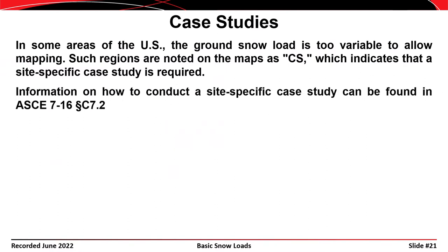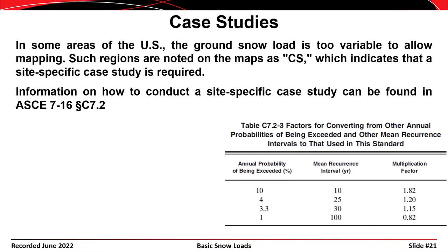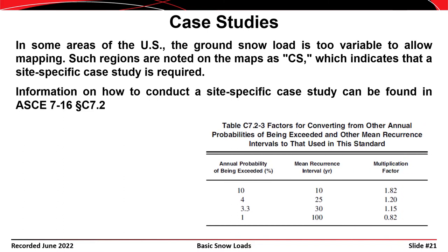Information on how to conduct a case study is found in the commentary to ASCE 7, section C 7.2. There is also a table providing guidance on how to convert between different probabilities of exceedance and mean recurrence intervals, in case the data provided for the case study doesn't match the 50-year mean recurrence interval required by ASCE 7.